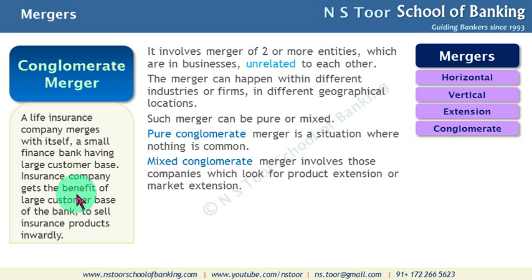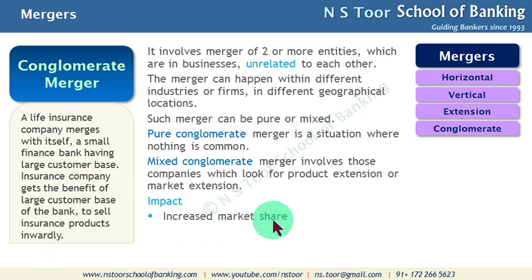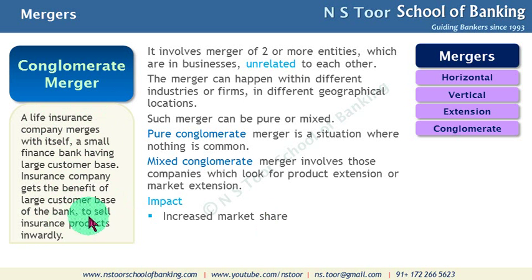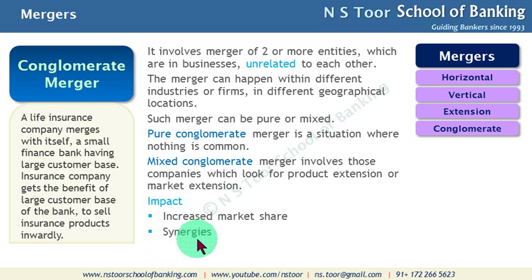Now, what is the impact of conglomerate merger? Number one: increased market share. The life insurance company can increase its market share by selling insurance products inwardly within the organization after the merger. Number two: there can be synergies — some strengths belong to the insurance business and some to the banking business.